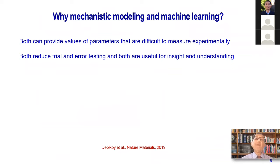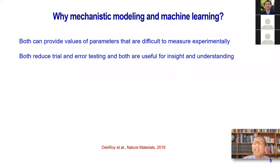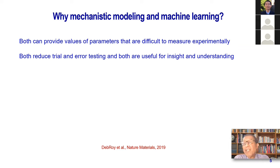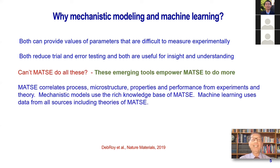The real question is: can we do without modeling and machine learning? Both can provide parameters like temperatures that are difficult to measure experimentally. Both can reduce trial and error testing and develop insights. If I do 3D printing and find lots of porosity or a cracked aluminum part, wouldn't it be nice to know before doing the experiment that the parameters I am going to use will not work? That would save a lot of headache. Mechanistic modeling and machine learning are capable of doing exactly that. If we don't make use of them, we do so at our own peril — they are enormously useful.